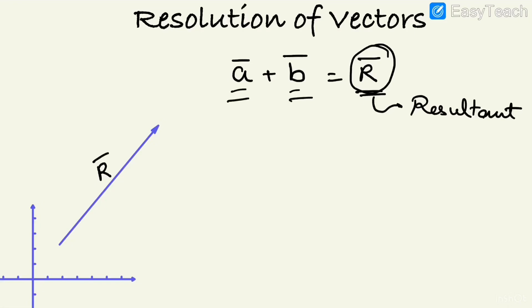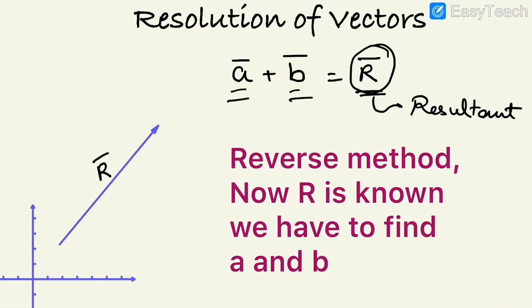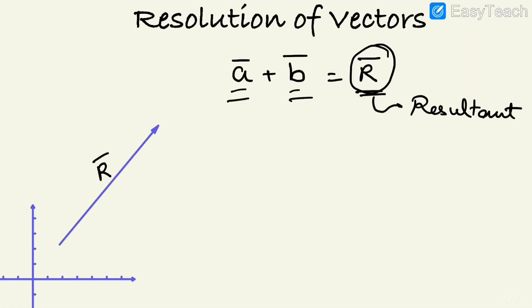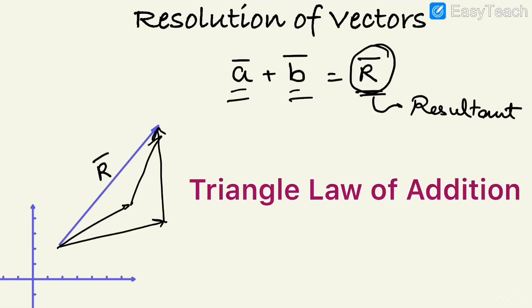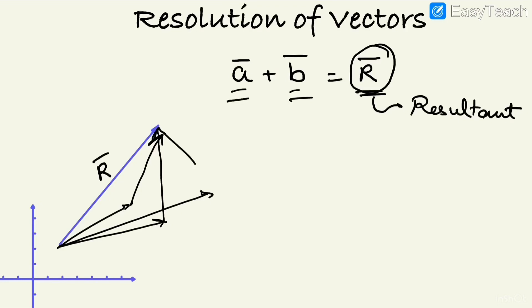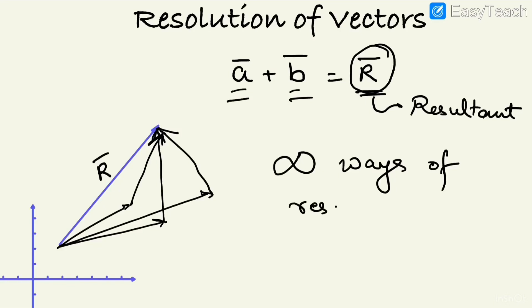There are infinite numbers of possibilities because these are vectors. I can add these two vectors by the triangular law in many different ways, so there are infinite ways of resolving a vector — infinite ways of resolving a vector into two vectors.